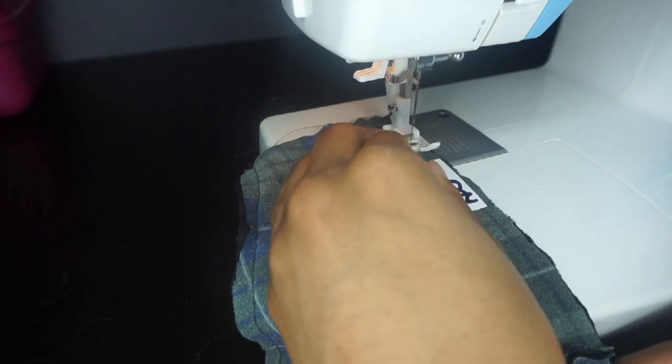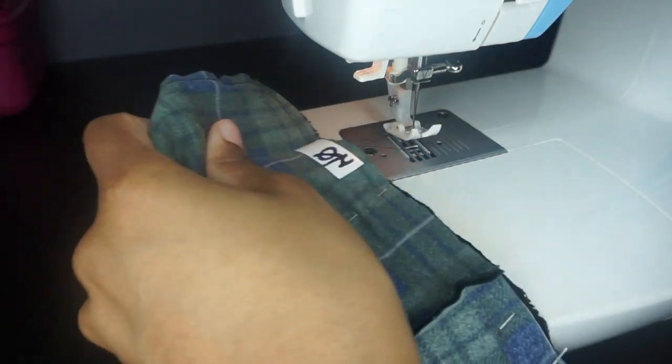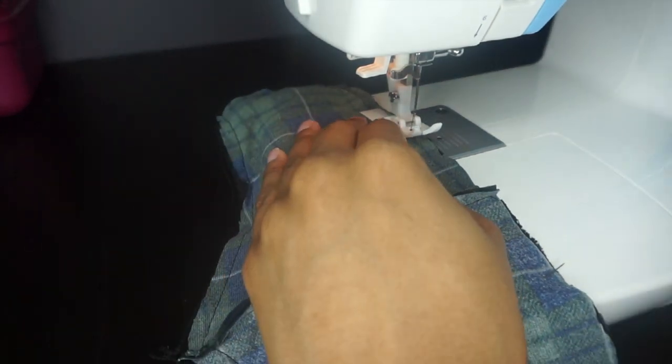When we get here to the tape now, we're going to sew up to the tape, lift your presser foot and then begin on the other side of the tape, or just simply cut the thread and start again, whatever floats your boat.